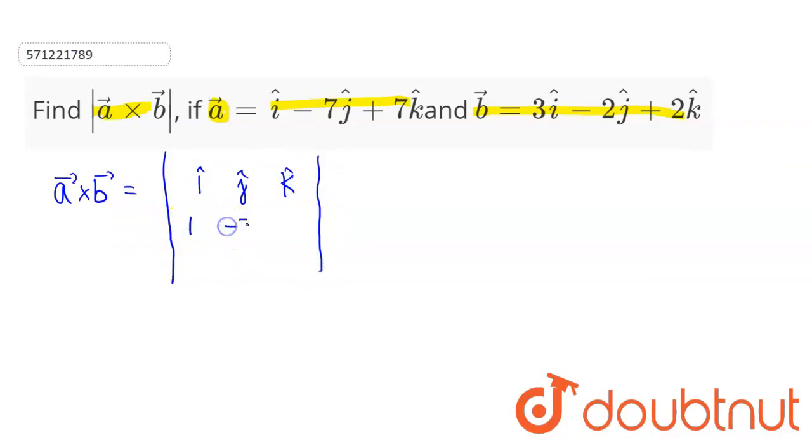So this will be 1, minus 7, and 7. In row 3, the coefficients of i cap, j cap, and k cap of vector B will be 3, minus 2, and 2.